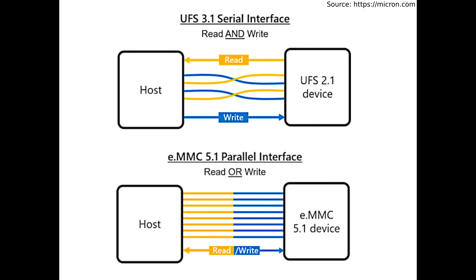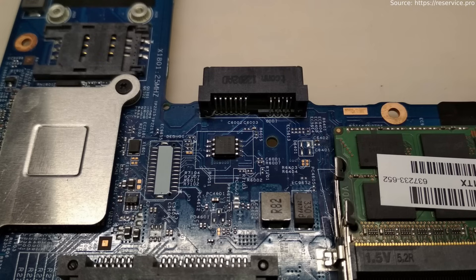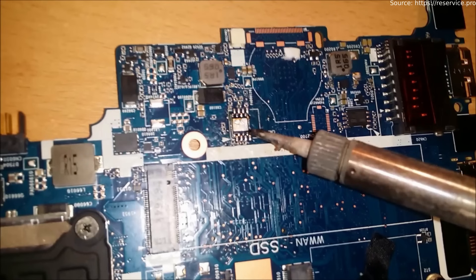There's a fourth type of memory used in high-end devices that we do not mention here, slowly replacing eMMC. It's called UFS. Your computer BIOS is most likely stored in SPI flash — go ahead, open it up and have a look, but don't break it.